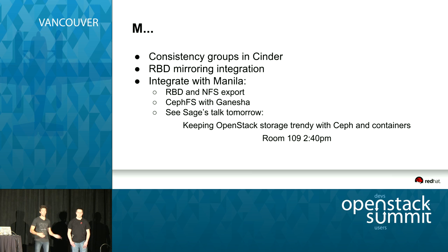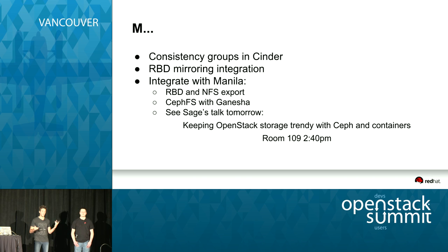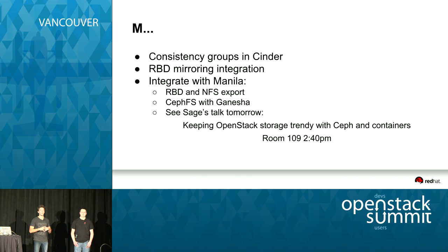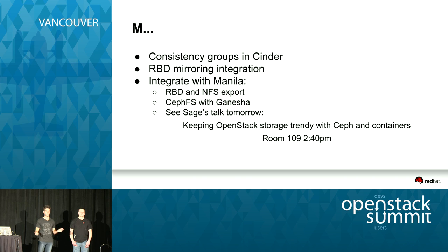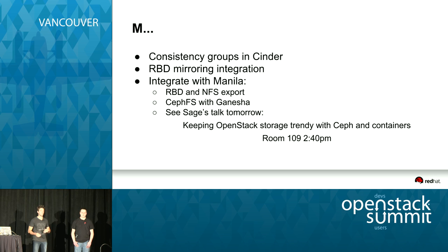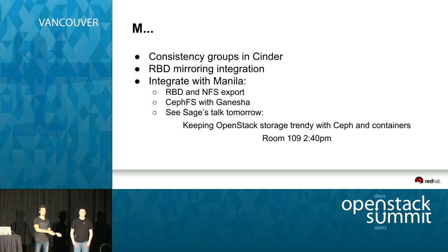A little beyond Liberty, we have to support consistency groups in Cinder. It's something that has been around for two years in Cinder and we haven't done any work on it. Consistency groups are a way to get a consistent snapshot for a given environment — if you have an entire application, you want to snapshot everything at the same time to get a consistent snapshot at all different layers. We also want to implement RBD mirroring, a feature Josh is currently working on, and expose it to OpenStack.